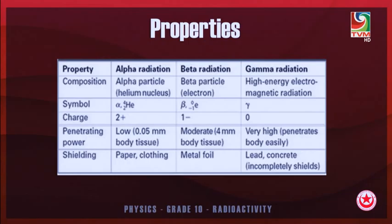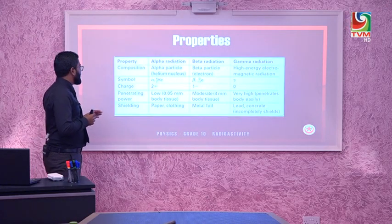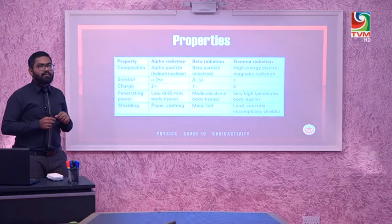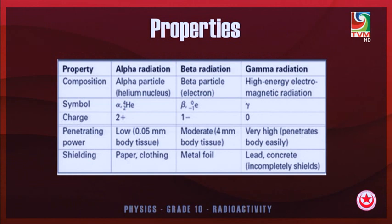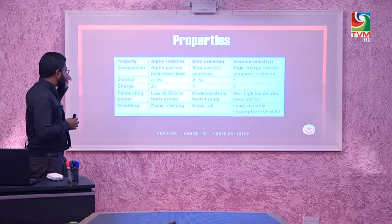Because alpha and beta have a charge, they can be deflected in an electric or magnetic field, but gamma radiation is not deflected because it has no charge. For penetrating power, alpha travels only a few centimeters in air as it collides with particles and loses energy. Beta has moderate penetrating power, being much smaller than alpha. Gamma has very high penetrating power.